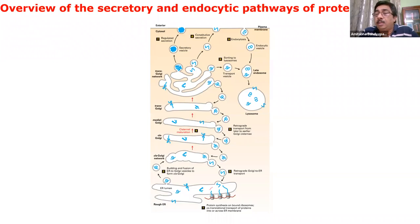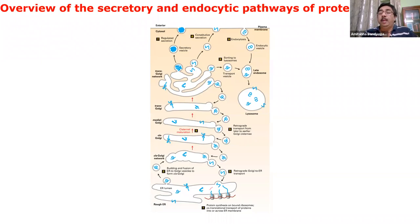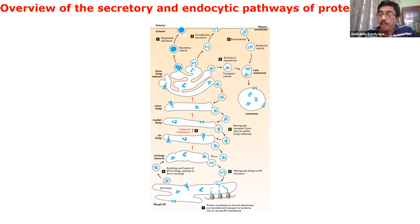Sometimes they're transported to different subcellular compartments. There is also some transport from the different membranous organelles — like the transmedial cis-Golgi and ER — that can happen in the reverse direction.